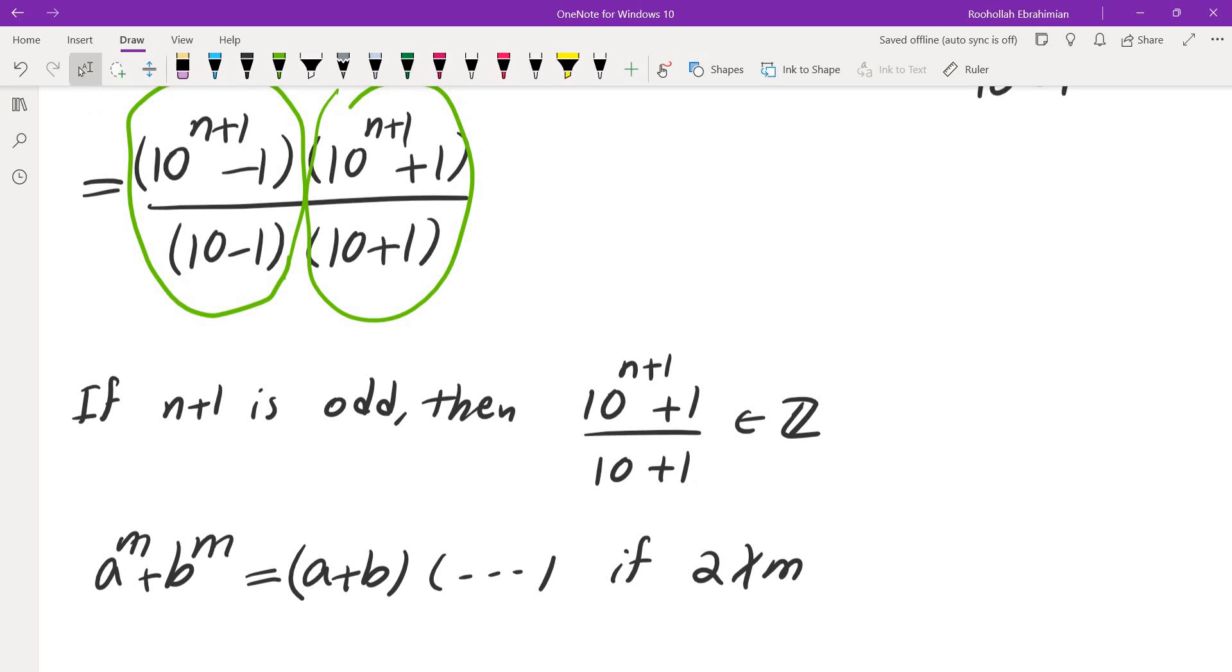So, in that case, I have written the number as the product of 2 integers, both of which are more than 1, and therefore, the answer is that this is not prime.